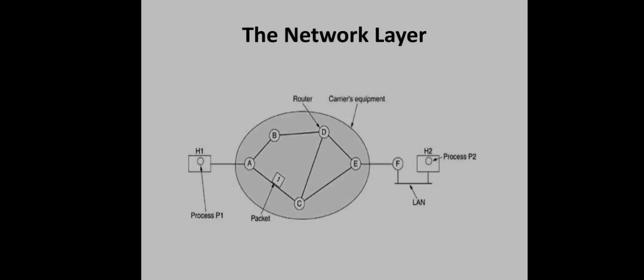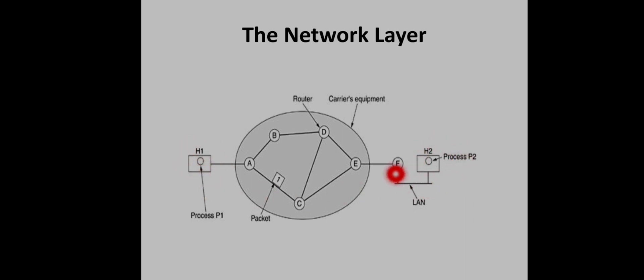Before moving on to the topic, let us first familiarize with the context of a network layer. The major component of the system is carrier equipment — all the routers and interconnecting transmission lines together form the complete infrastructure called carrier equipment. It may be owned by a private company, or different parts may be owned by different companies. The second component is the customer's equipment, which may be a personal computer, a personal device, or an organization's LAN.